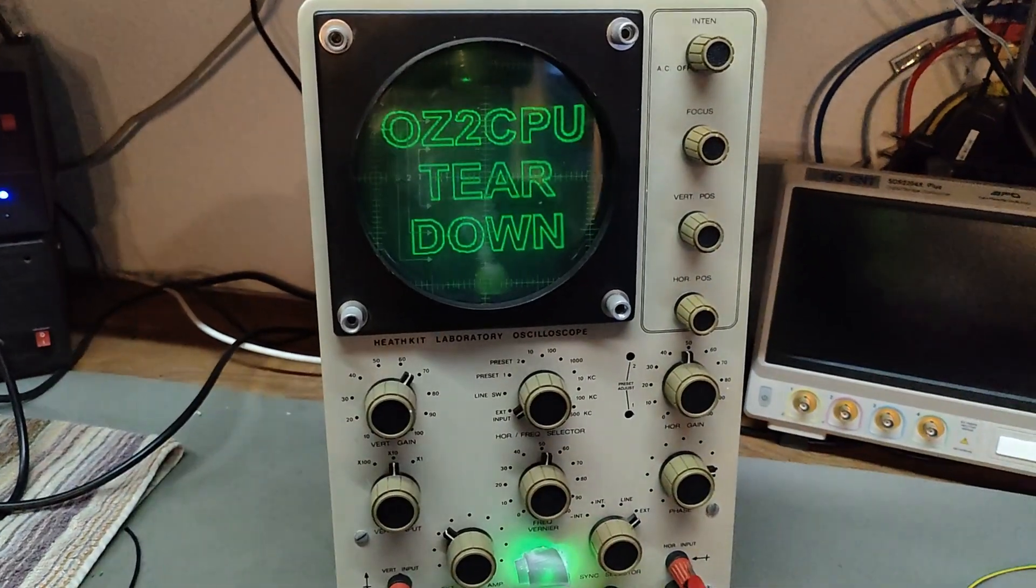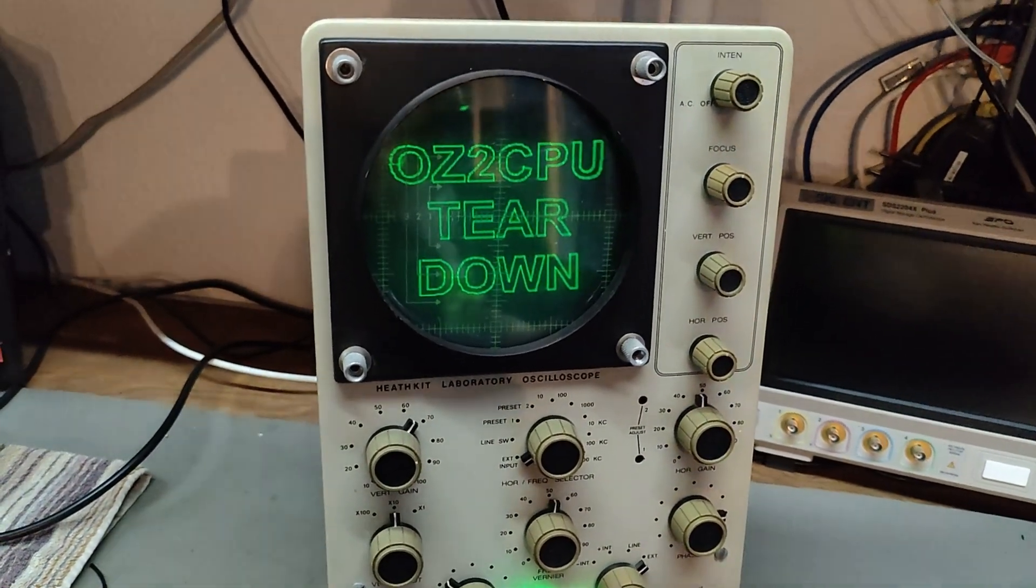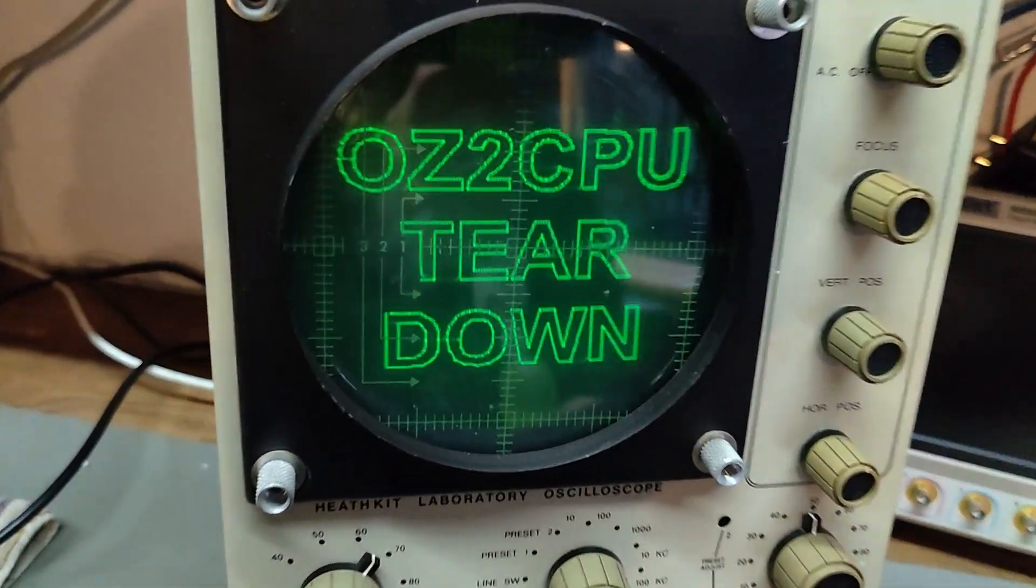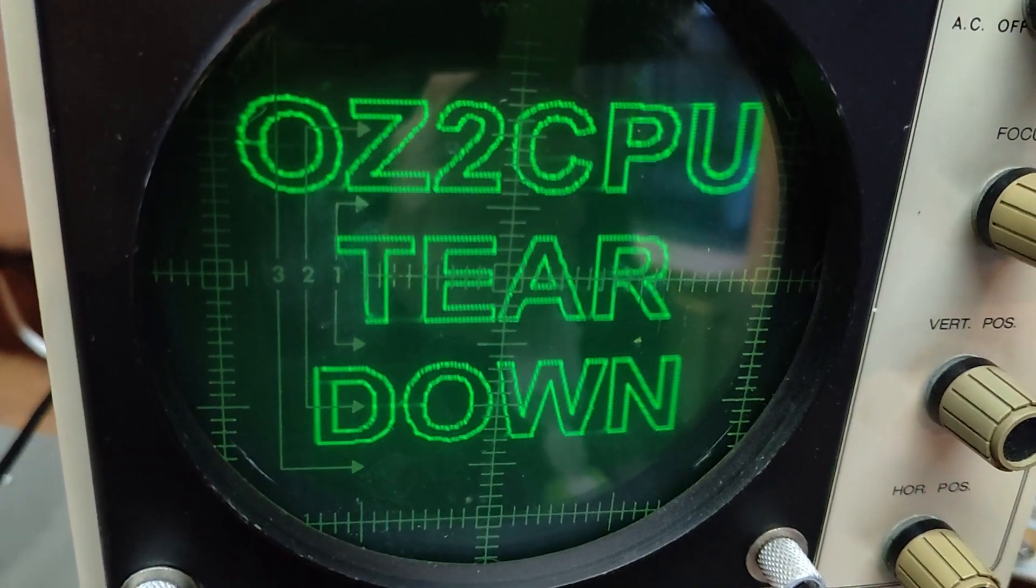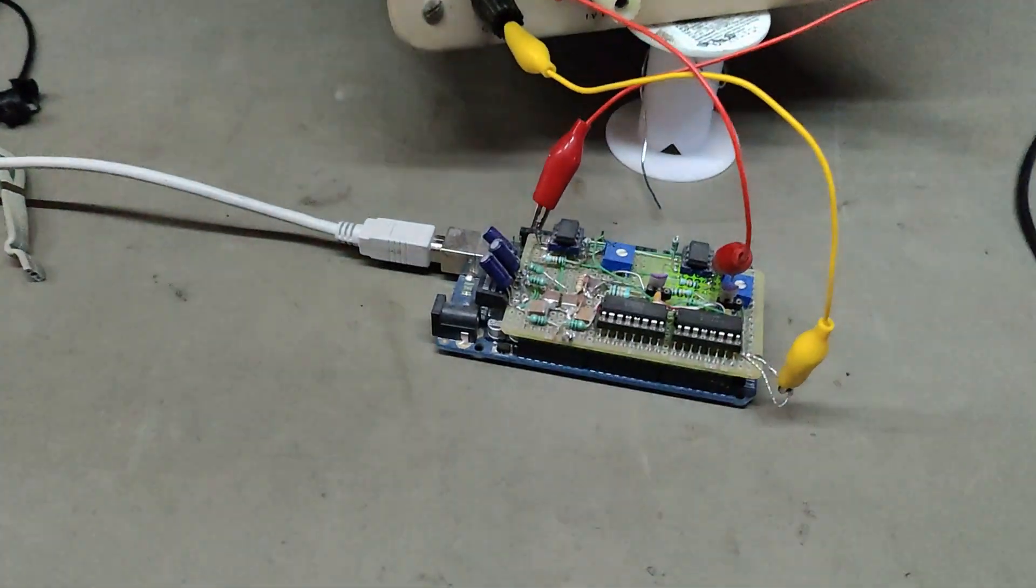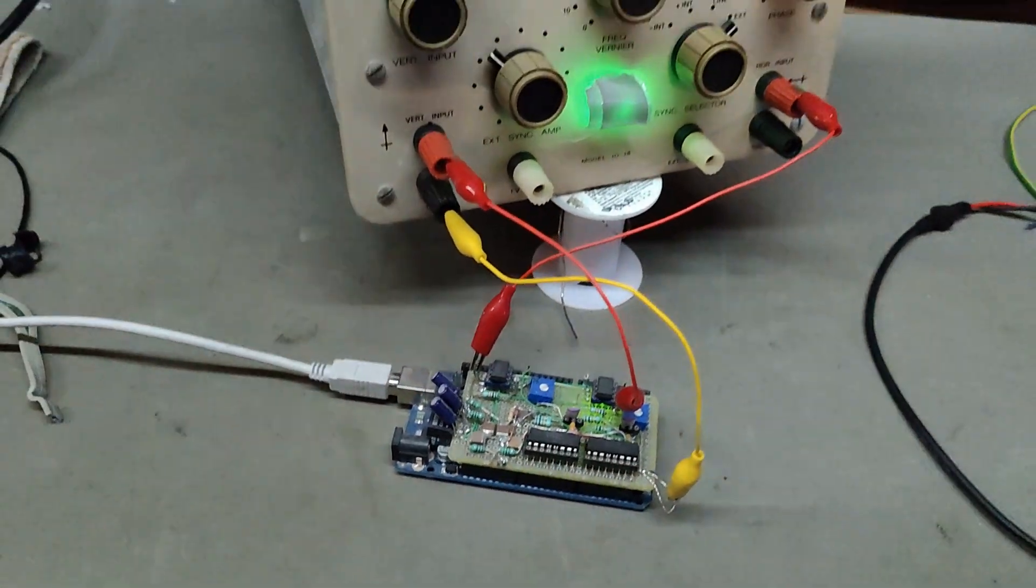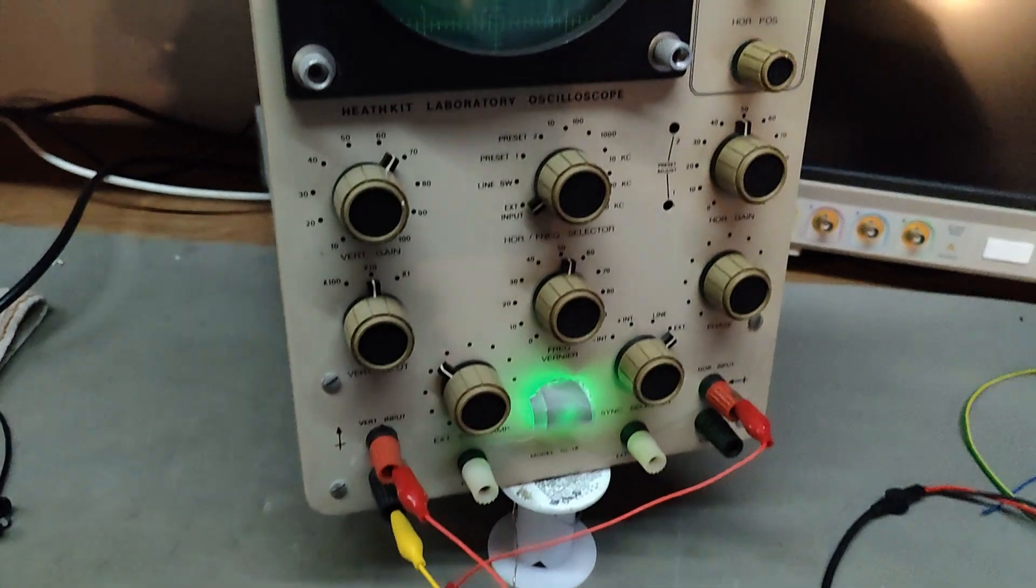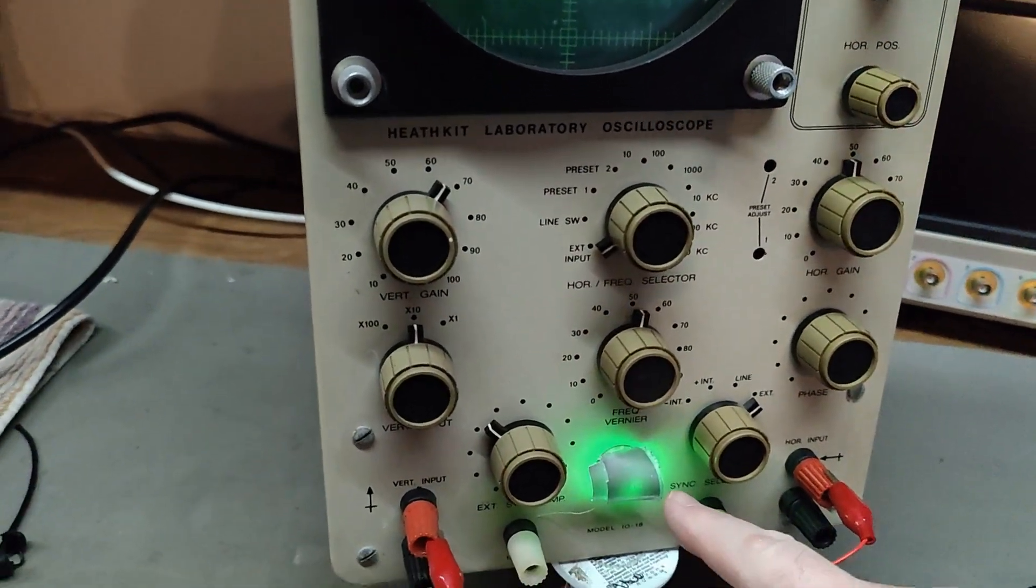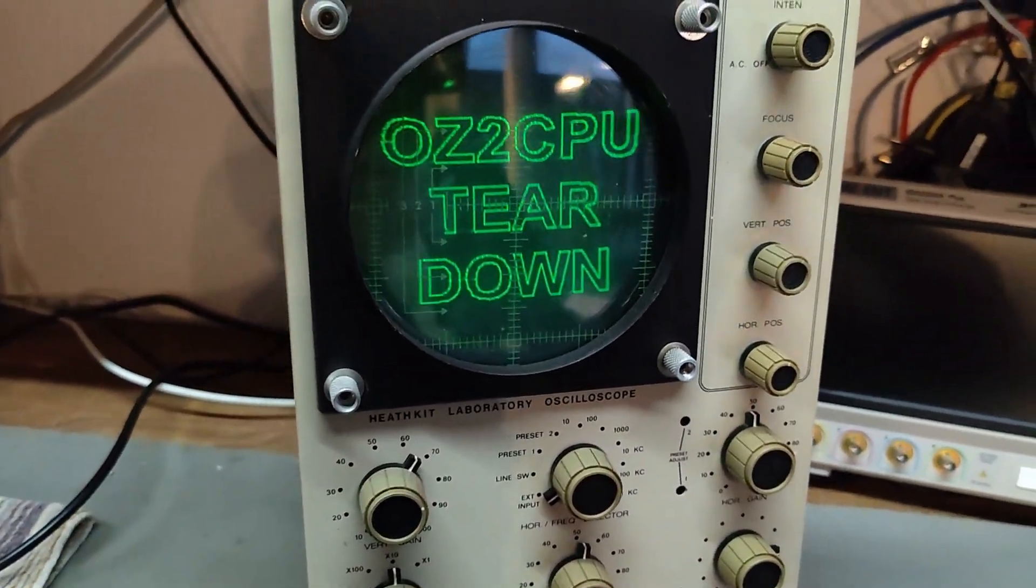Of course it works with external horizontal input as well. So I can use my little XY plotter to make my channel logo here on this one. It was already presented in one of my videos, so you're welcome to have a look. I had to put some tape over that, otherwise the camera is going to go absolutely crazy.